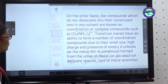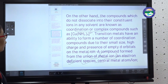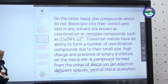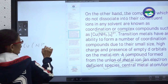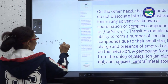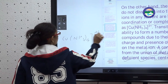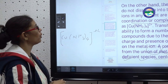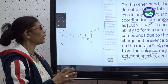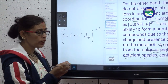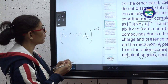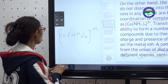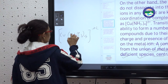For example, [Cu(NH₃)₄]²⁺ — this is called a complex compound or coordination compound. This compound does not break down into its constituent ions in solution, and that is what makes it a complex or coordination compound.